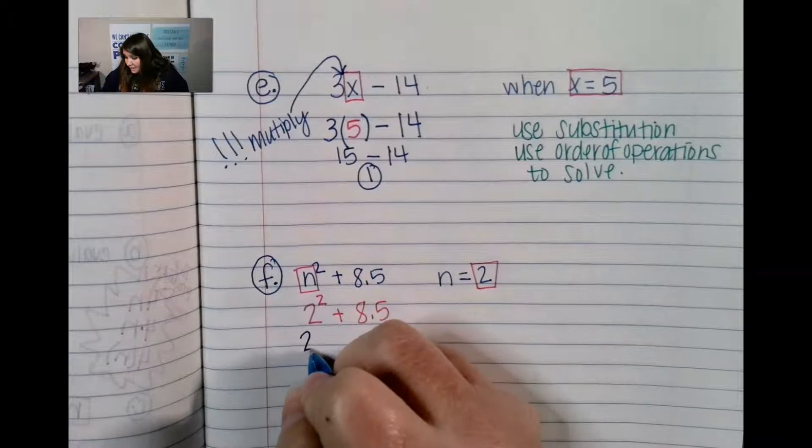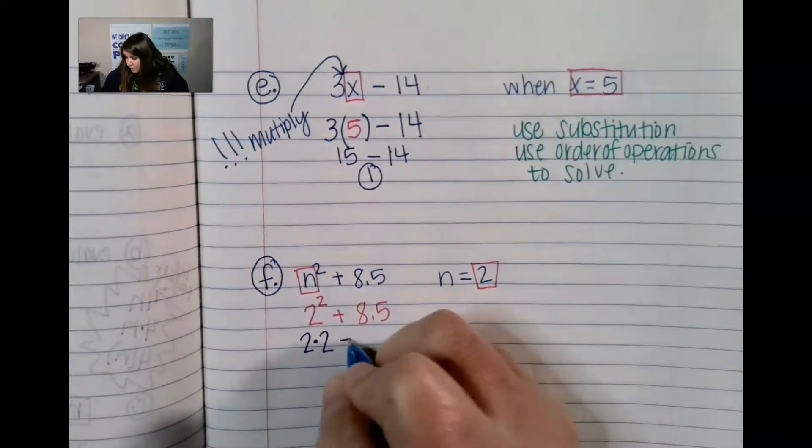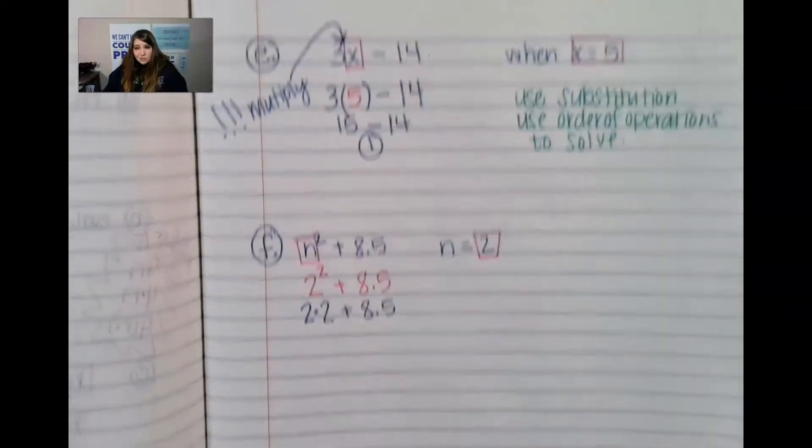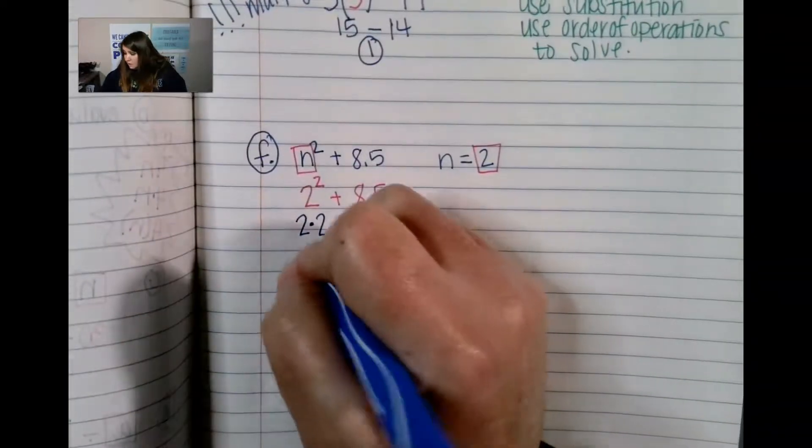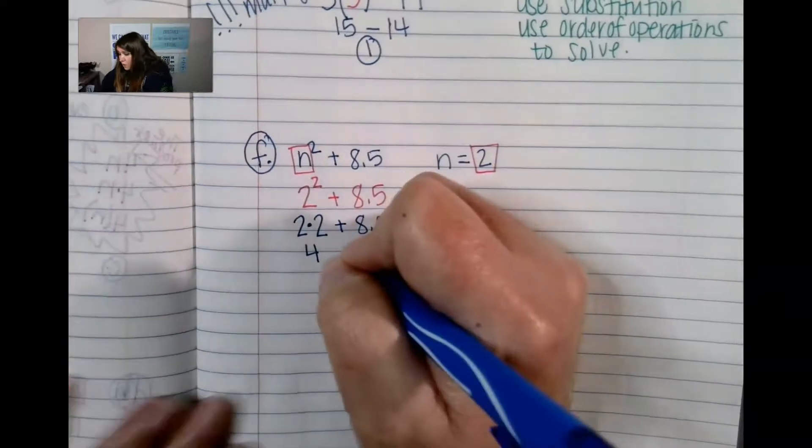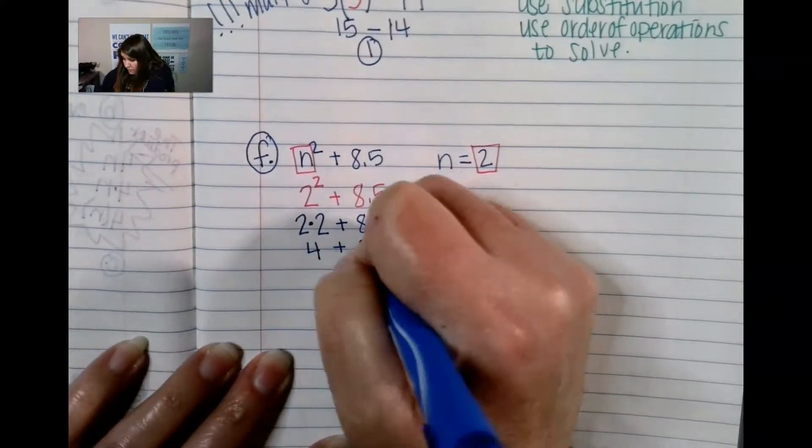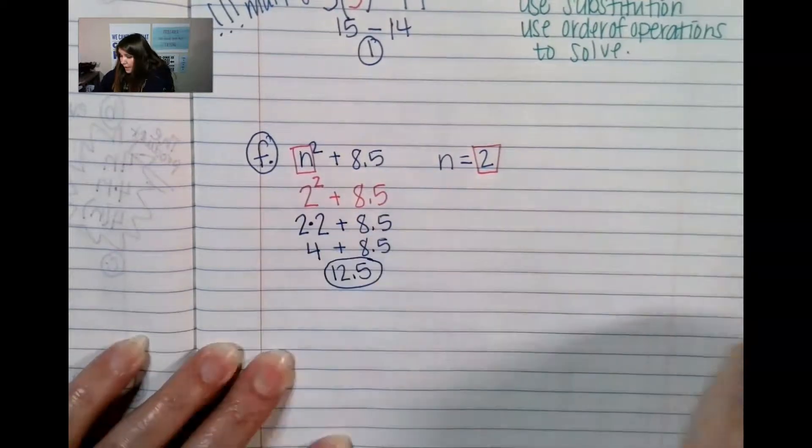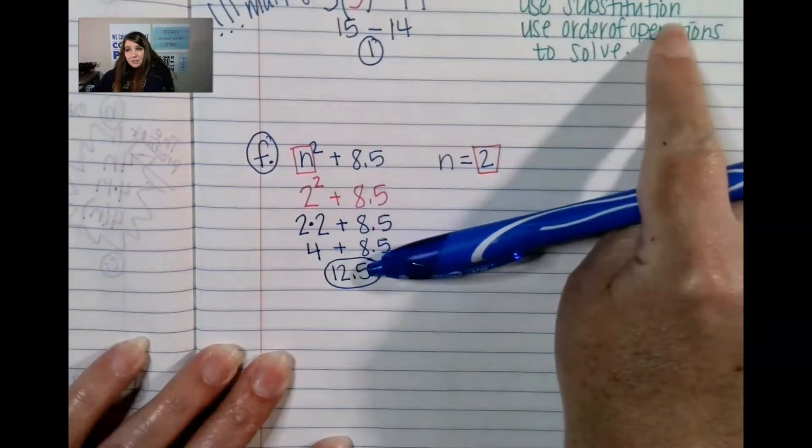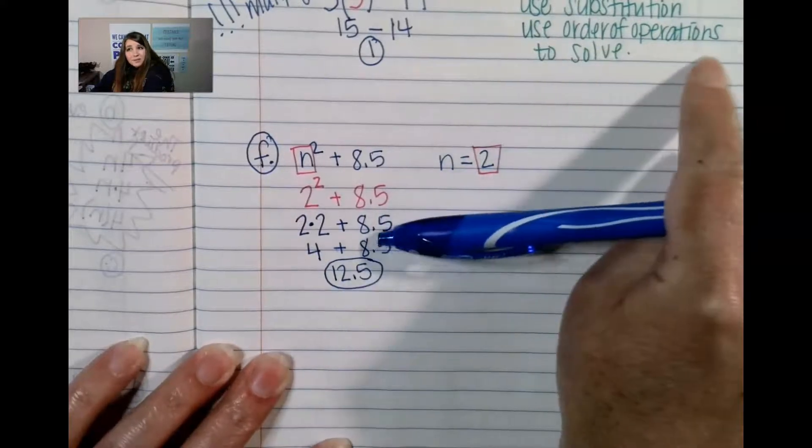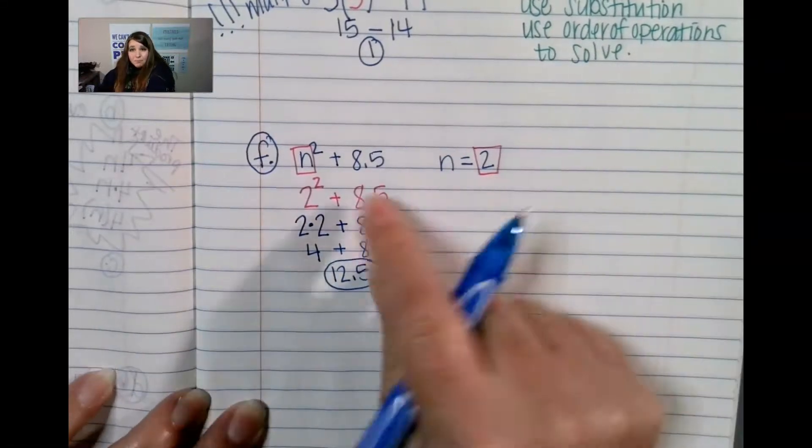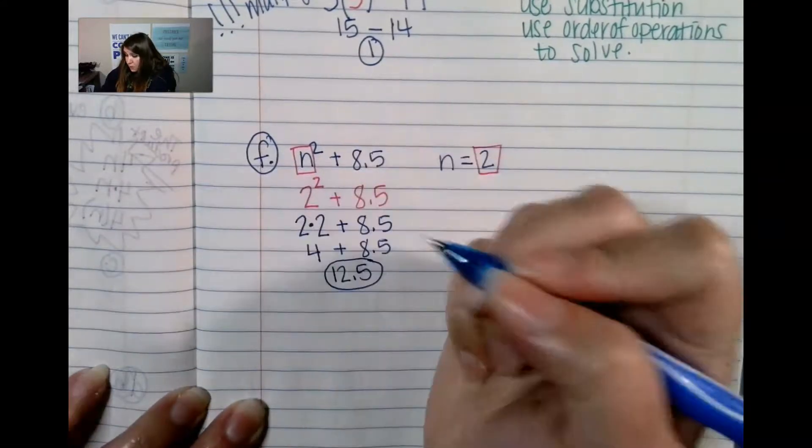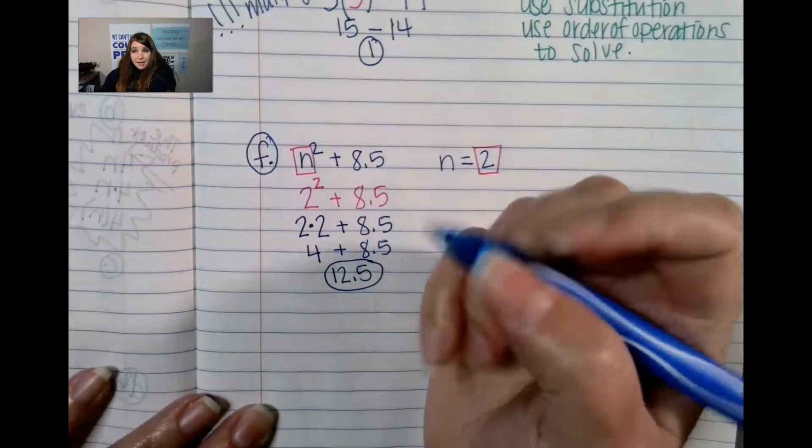It's the same as saying 2 times 2 plus 8.5. 2 times 2 is 4. And 4 plus 8.5 is 12.5. Again, we're using substitution. We're using the order of operations and we're solving. We're just remembering that exponents mean multiplication again.